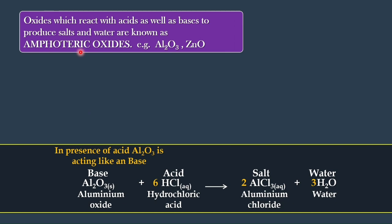Oxides which react with acids as well as bases to produce salts and water are known as amphoteric oxides. The definition: those oxides which react with both acids and bases to produce salts and water are amphoteric oxides. Examples are aluminium oxide and zinc oxide.